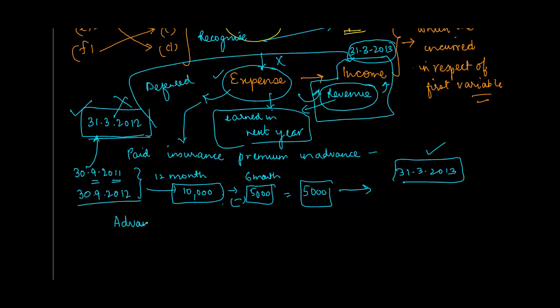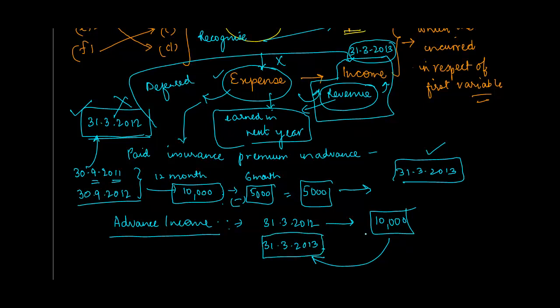Similarly, the third case could be in respect of advance income. Someone comes to you on 31-3-2012 and says, 'Can you provide me this particular service? I'm paying you 10,000, provide me this service for the year ended 31-3-2013.' In such a case, the income has to be recognized in the year in which the service is to be provided.